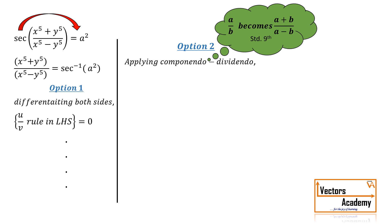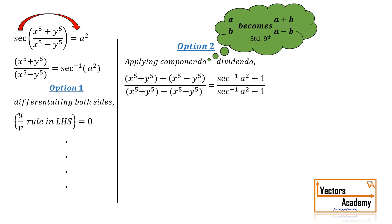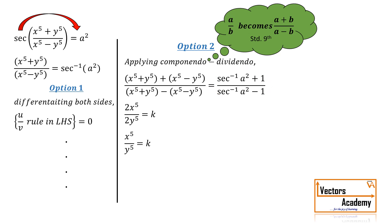If the ratio is a/b, by Componendo Dividendo it becomes (a+b)/(a-b). Applying Componendo Dividendo to our question, the left hand side becomes 2x raised to 5 upon 2y raised to 5, while the right hand side, though it looks complicated, still contains no x or y — so we treat it as constant k. Cancelling 2 and taking the 5th root gives x by y equals the 5th root of k.